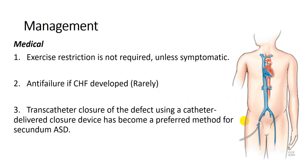How do we manage a patient with ASD? Starting with medical treatment: exercise restriction is not required unless symptomatic, and if symptomatic, it is individualized according to the degree of symptoms — basically there is no need to restrict the child from activity. If the patient has heart failure, treat with anti-failure medications. For closure: transcatheter closure of the defect using a catheter delivery system and a closure device has become the preferred method for secundum ASD. A catheter is passed through the femoral vein to the right atrium, across the defect, and a device is placed in the defect.